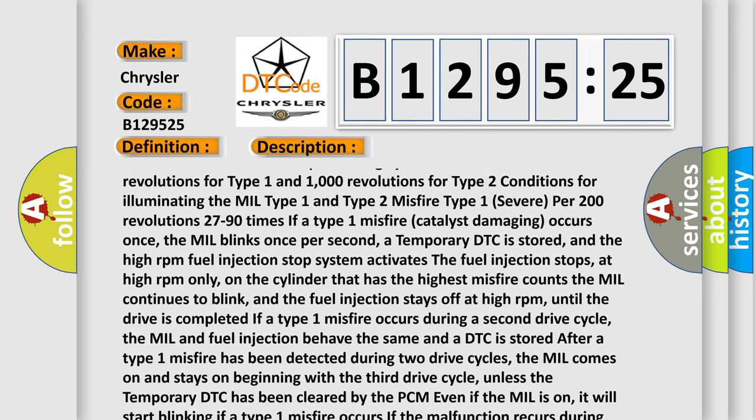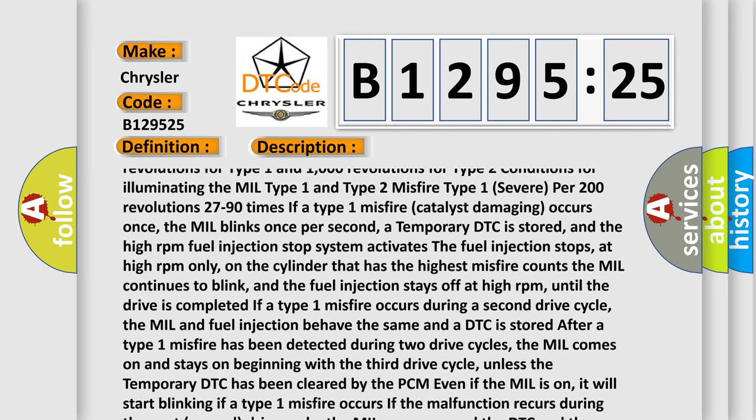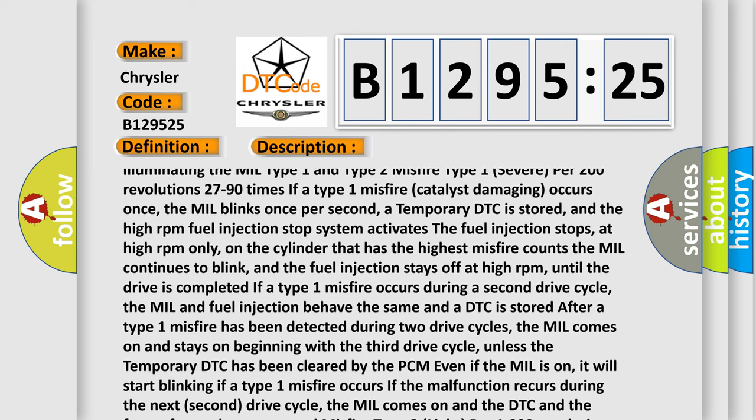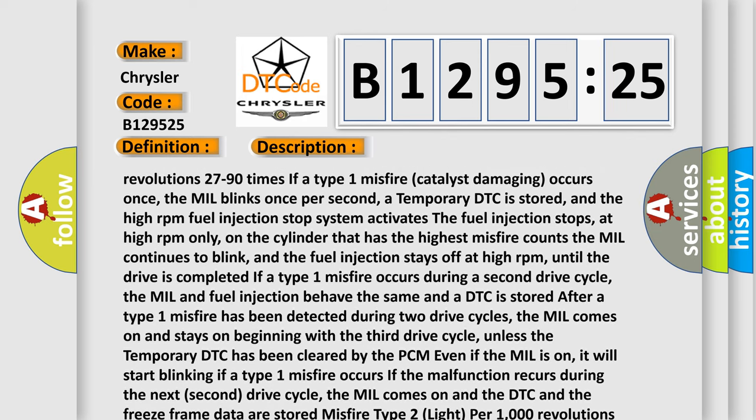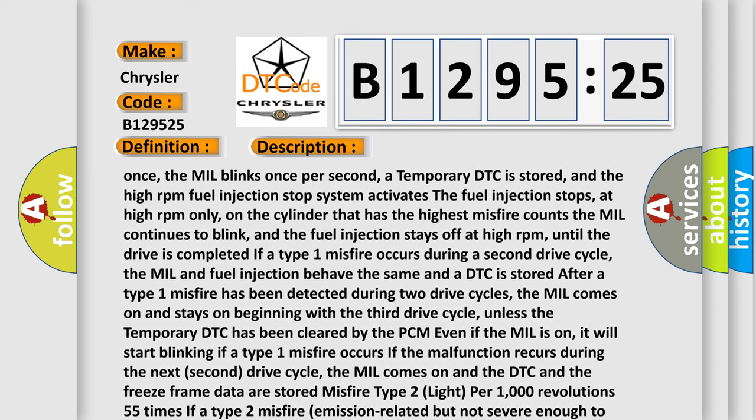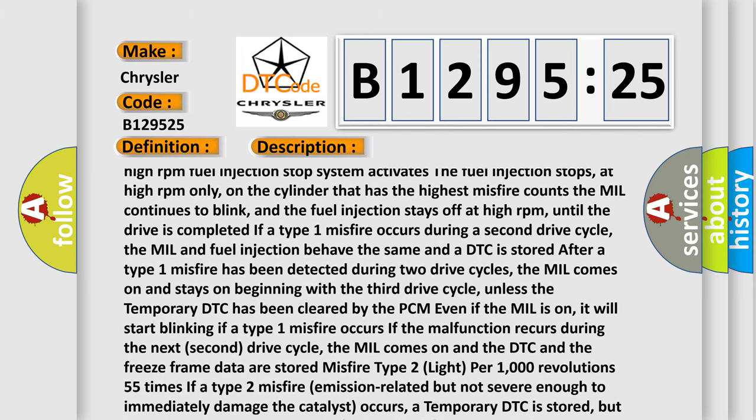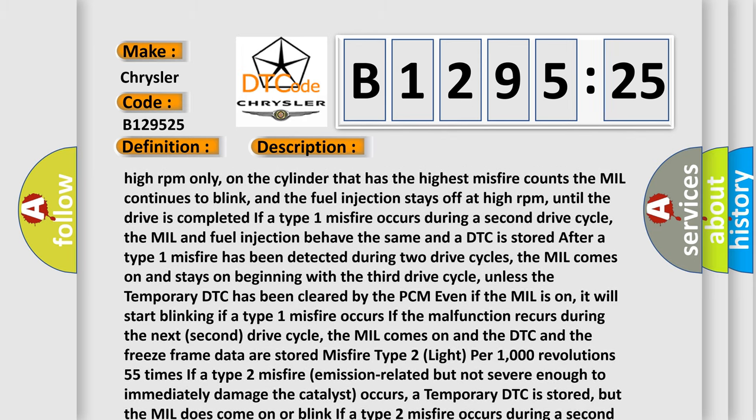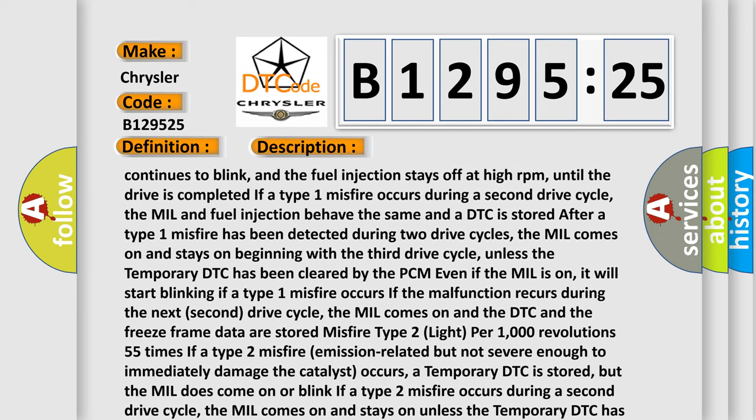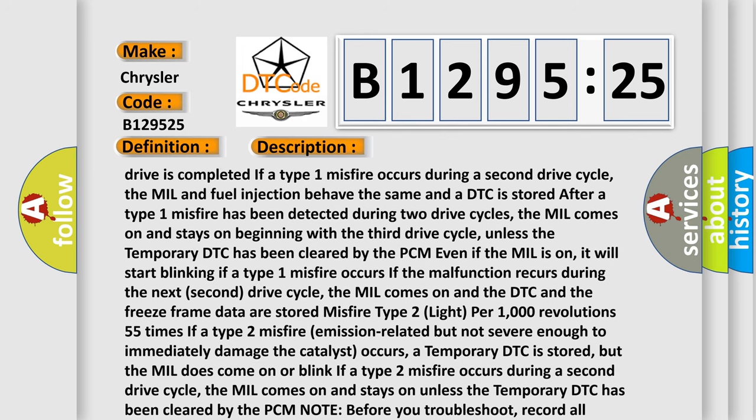The power supply system to the occupant classification AQ, the occupant classification AQ itself, or the AC AQ may be defective. If DTC U0154 is stored as a past trouble, carry out diagnosis with particular emphasis on wiring and connectors in the CAN bus line between the AC AQ and the occupant classification AQ, and the power supply system to the occupant classification AQ.